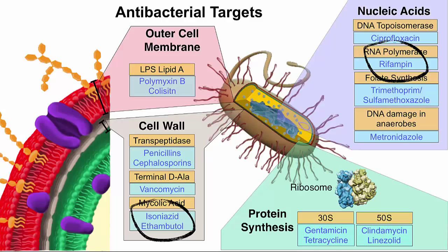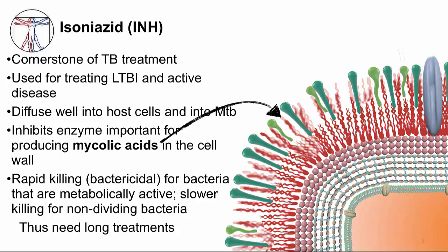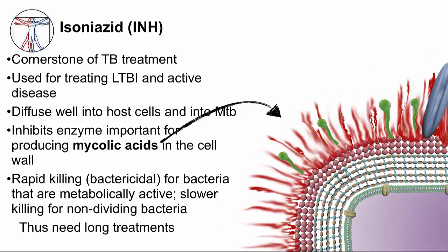Isoniazid is the cornerstone of TB treatment, and it's used to treat both LTBI and active TB disease. It diffuses well into host cells and into MTB. Its mechanism of action is to inhibit enzymes important for producing mycolic acids in the cell wall — the unique lipids in the cell wall. It is rapidly bactericidal for metabolically active bacteria and has slower killing for non-dividing bacteria, which is why isoniazid is given for a long time.